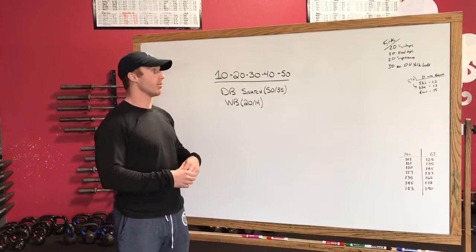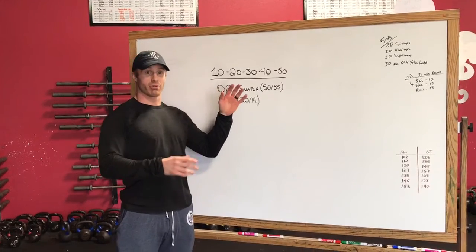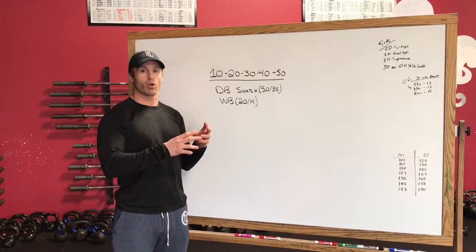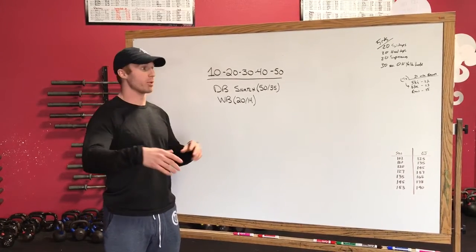Obviously here we've done a lot of reverse where it's descending, where it's fifty down to ten, and you can kind of hold on that pace because you know you're gonna go down in number. But with this, the reps keep going up, so you need to pace that accordingly.